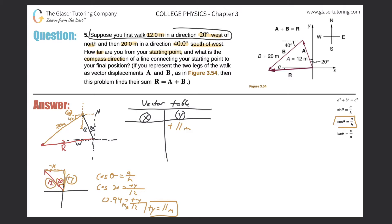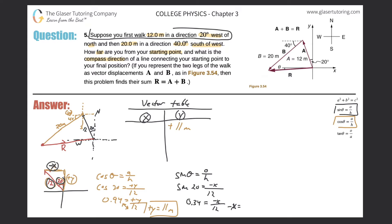Now let's calculate the negative x value. I know the hypotenuse and the angle, and this side seems to be opposite of that angle — so I'm going to use sine. Sine of theta equals the opposite side over the hypotenuse. So the sine of 20 will equal the negative x value over 12. Sine of 20 is 0.34 to two sig figs. That equals the negative x value over 12. Cross-multiplying: 0.34 times 12 works out to 4.1 meters. Remember, that's negative, so plug in negative 4.1 meters in your table.